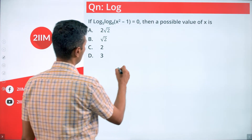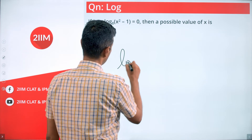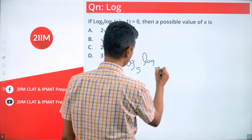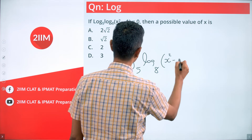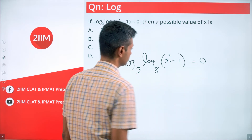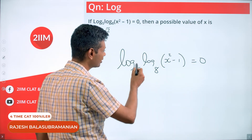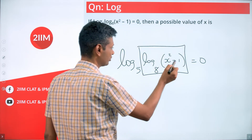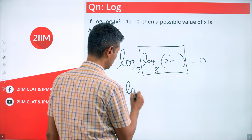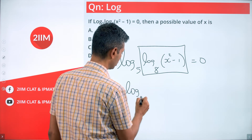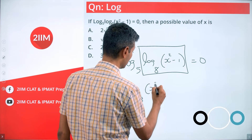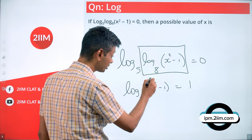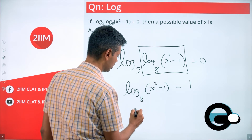We have log base 5 of (log base 8 of (x² - 1)) = 0. If log something to the base 5 is 0, that something must equal 5 power 0, which is 1. So log base 8 of (x² - 1) should equal 1. If log something to the base 8 is 1, that something equals 8 power 1, which is 8.